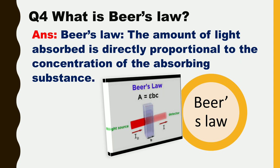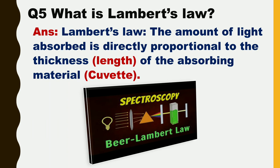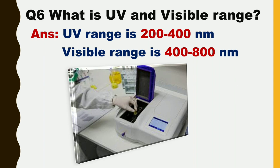Next question is: what is Beer's law? The answer is, the amount of light absorbed is directly proportional to the concentration of the absorbing substance. Next question is: what is Lambert's law? The amount of light absorbed is directly proportional to the thickness of the absorbing material.